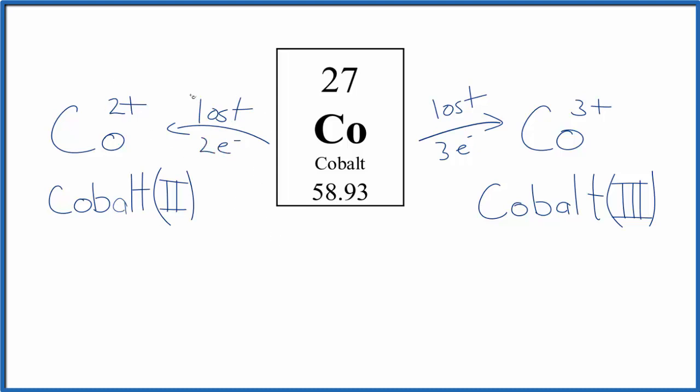You might ask, where did these electrons go? Well, if we had cobalt here that lost two electrons, something like chlorine will gain an electron and become chlorine 1-, the chloride ion. So 2+, we need two of these chloride ions to balance the charge out. Cobalt chloride is what we would end up with when this cobalt lost two electrons to chlorine.